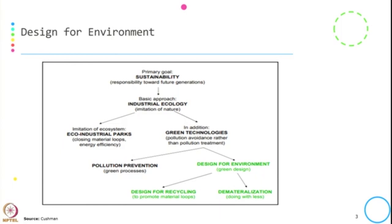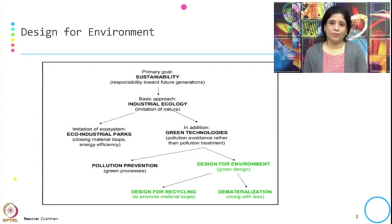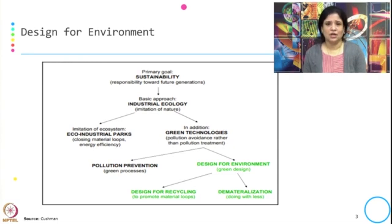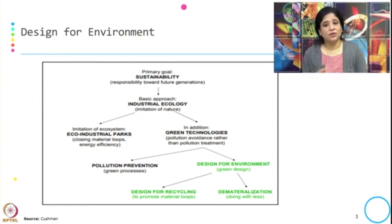Let us see where Design for Environment fits into our goal of sustainability. The primary goal is sustainability — that is responsibility towards future generations. The basic approach being followed is industrial ecology: we try to mimic nature to conserve and reuse resources. Getting into the imitation of the ecosystem, we get into eco-industrial parks, closing the material loops, and energy efficiency. Apart from this, we can get into green technology, and green technology talks about pollution avoidance rather than pollution treatment.